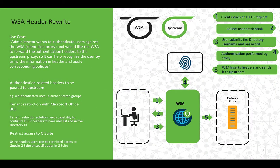Next we have proxy chaining use cases. Let me first start with the HTTP header rewrite use case. WSA will now be able to modify HTTP headers as per requirement. A common use case is that an administrator wants to authenticate users against WSA and would like WSA to forward authentication headers to an upstream proxy so that it can recognize the user by using the information available in the header and apply corresponding policies.